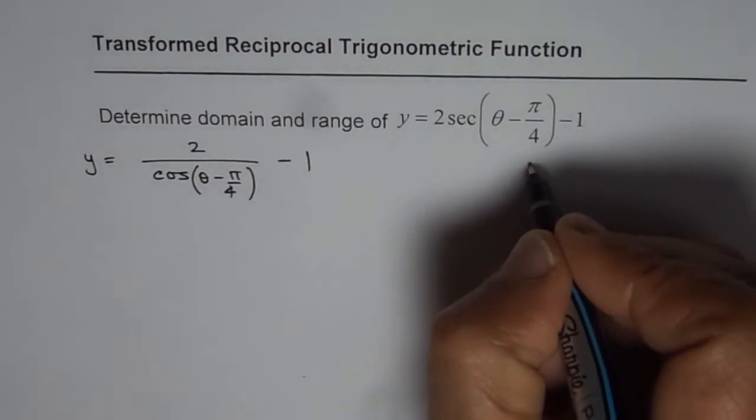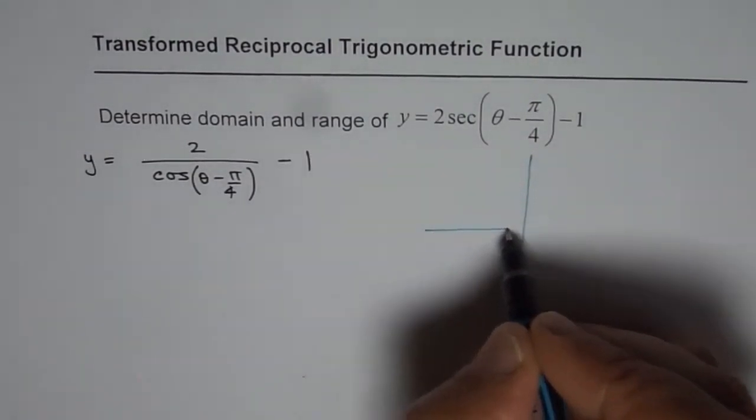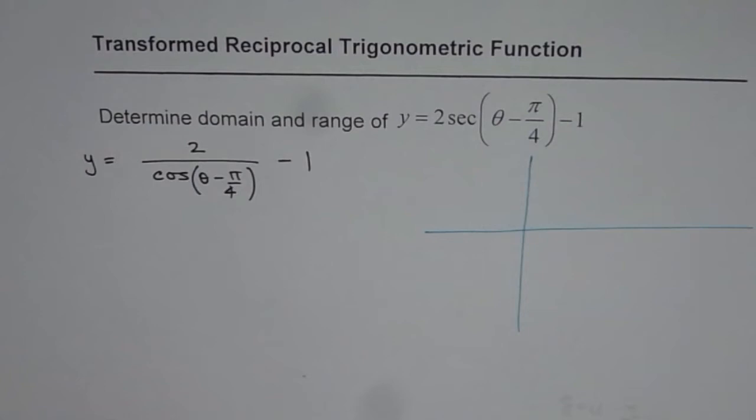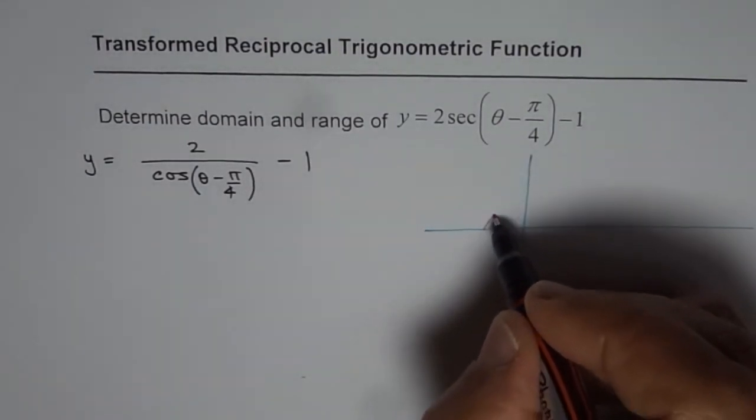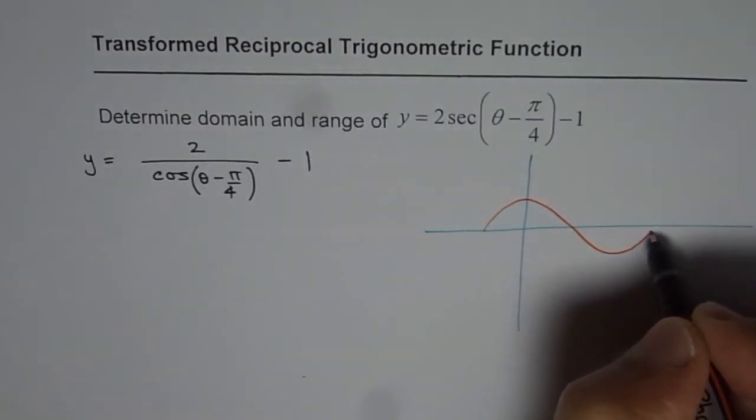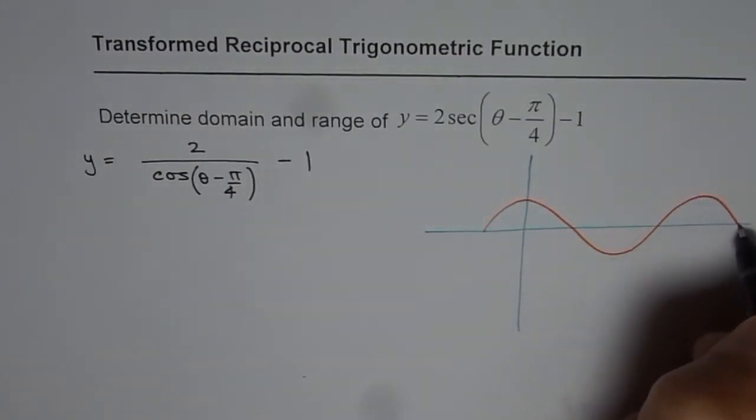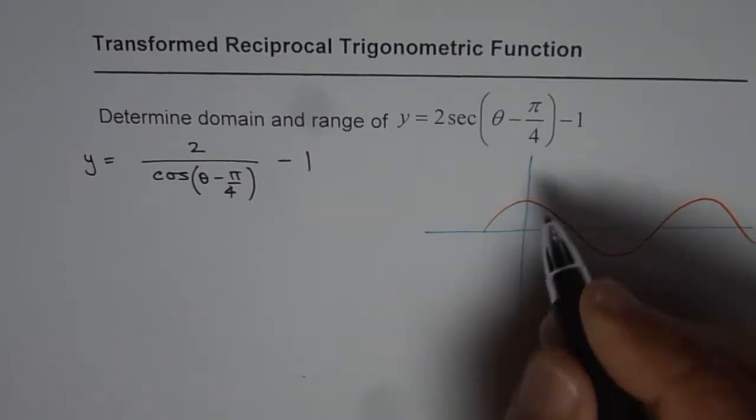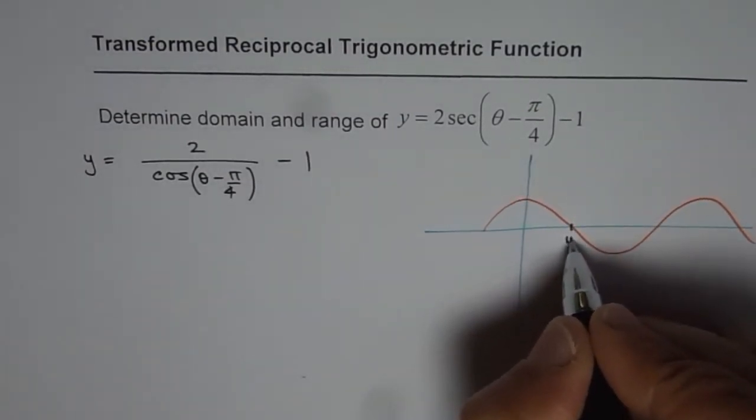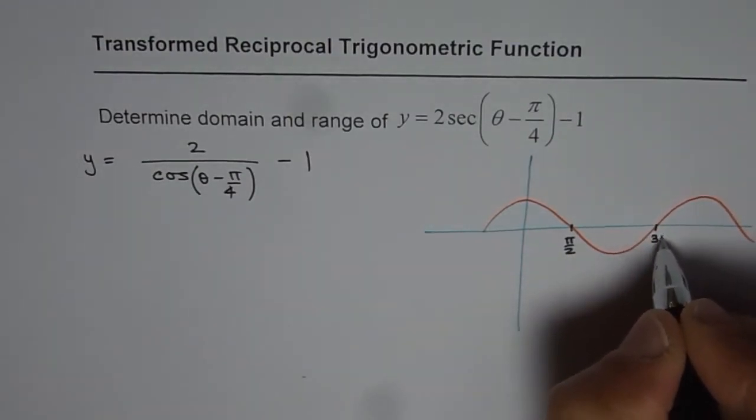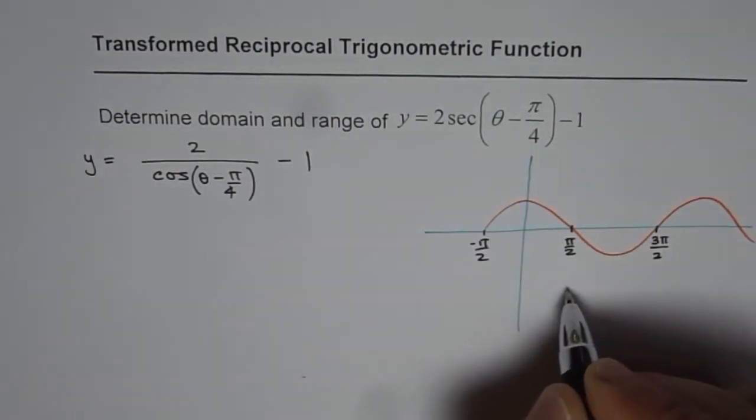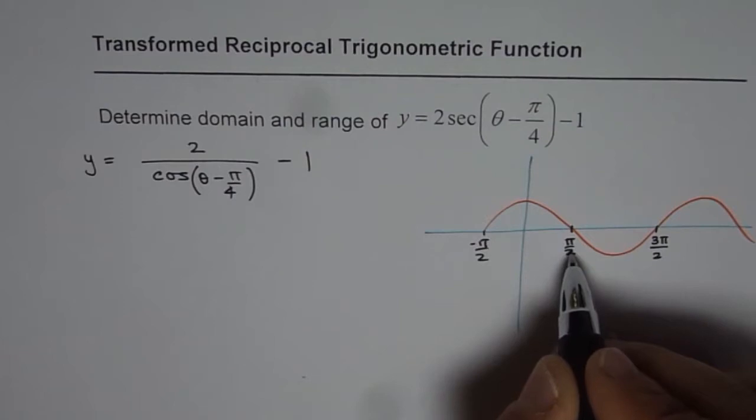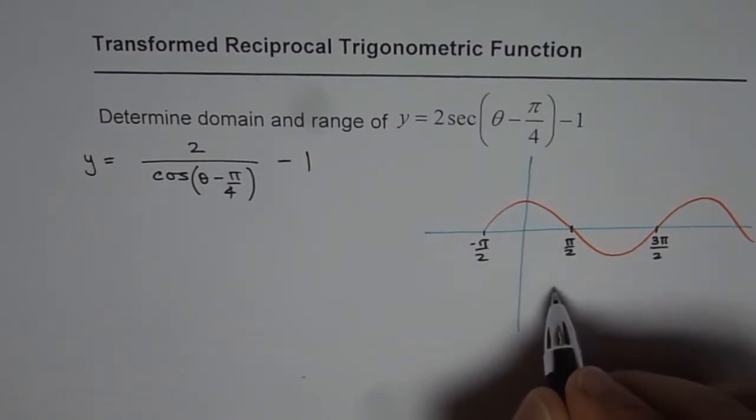For the given function, the restrictions will be when the denominator is 0, so let's figure out when the denominator will be 0. As you know, the cosine function is 0 for pi by 2, 3 pi by 2, minus pi by 2. Basically the cosine function is 0 for pi by 2 plus n pi.